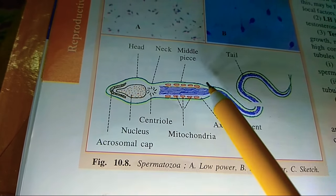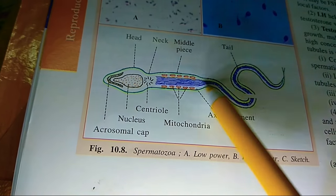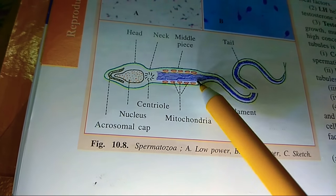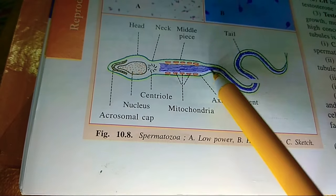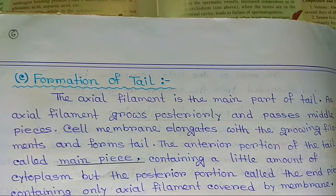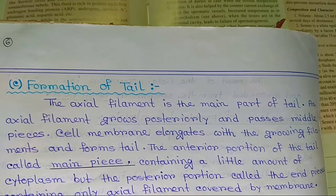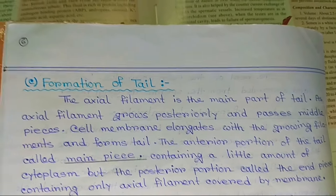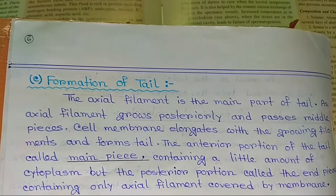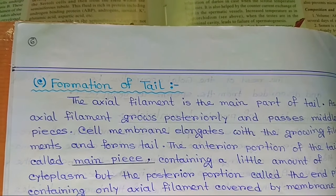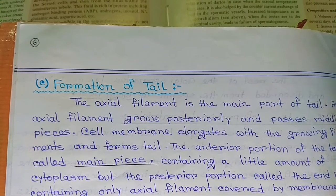Formation of the tail: the axial filament is the main part of the tail. As the axial filament grows posteriorly past the middle piece, the cell membrane elongates with the growing filament and forms the tail. The anterior portion of the tail, called the main piece, contains a little amount of cytoplasm, but the posterior portion, called the end piece, contains only the axial filament.